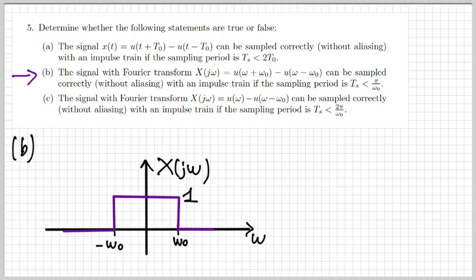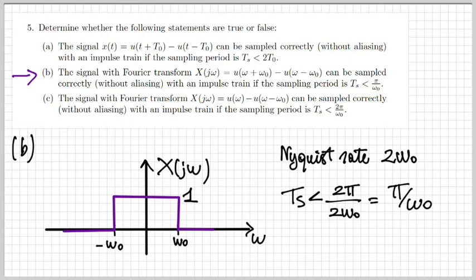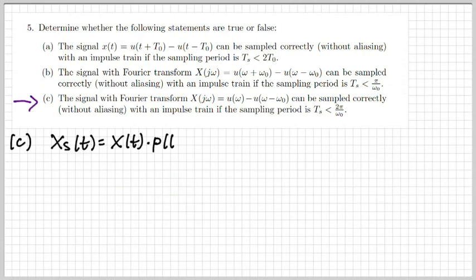Statement b: a signal whose Fourier transform is rectangular can be sampled correctly with sampling period Ts < π/ω₀. The Nyquist rate is twice the maximum frequency, which is 2ω₀. Therefore Ts must be smaller than 2π/(2ω₀) = π/ω₀. The statement is true — sampling with period π/ω₀ or smaller allows perfect reconstruction.